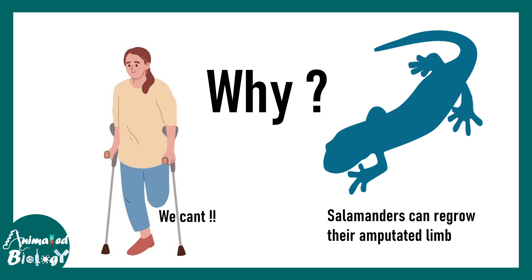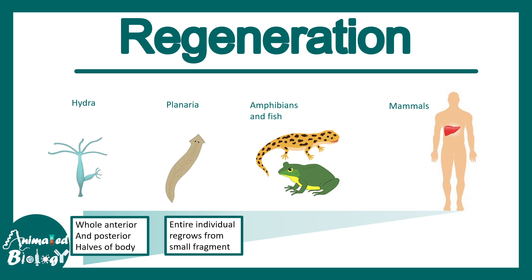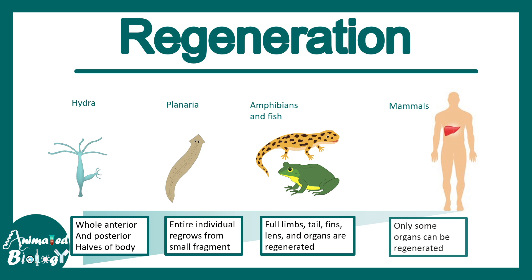This difference exists across the animal kingdom. Animals show decreasing regenerative potential — for example, hydra or planaria have the capability to regrow entire body segments, whereas the potential decreases gradually towards mammals. Mammals can only regenerate certain parts of an organ. Amphibians can regenerate their limbs, tails, or fins, whereas mammals cannot do that.